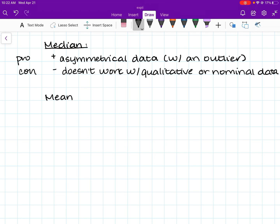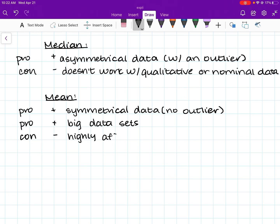We've got mean. Mean is the average. A pro, mean is that it's really good for symmetrical data points. So it's really good for symmetrical data points. So no outlier. And it's really good for big data sets. Big data sets. So if you've got like hundreds of values, mean is the way to go. But a con is that mean is highly affected by outliers. So if you've got major outliers in a data set, it's going to mess with the mean.